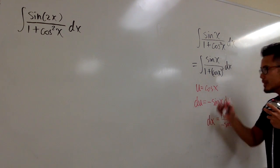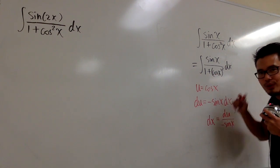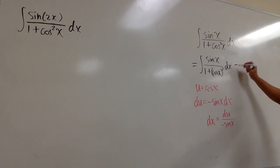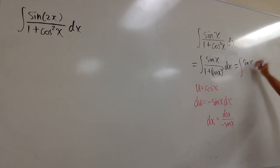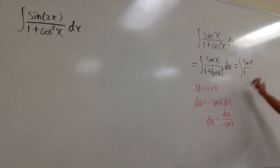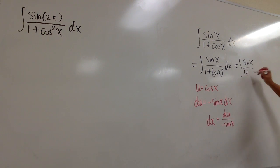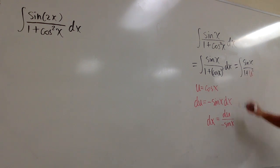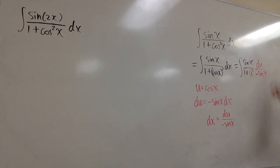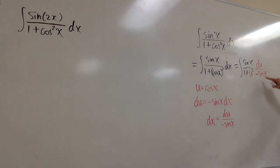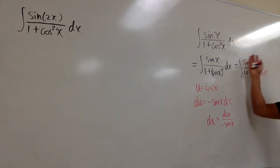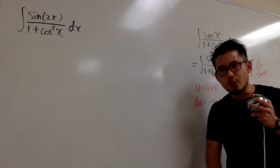I want to show the cancellation, so let's isolate dx by dividing both sides by negative sine x. So dx equals du over negative sine x. With all these ingredients, we can take this integral into the u-world. We still have sine x on top, over 1 plus u squared, times du over negative sine x. The sine x cancels with sine x precisely, and this integral is completely in the u-world.